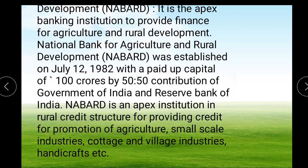NABARD functions as an Apex Institute and serves as a refinance institute for all kinds of production and investment credit to agriculture, small-scale industry, cottage and village industries, handicrafts, rural crafts, and allied economic activities, with the aim of promoting integrated rural development. It provides short-term, medium-term, and long-term credit to state cooperative banks and financial institutions approved by RBI. NABARD also gives long-term loans of up to 20 years, enabling state governments to subscribe to share capital of cooperative credit societies, and coordinates the activities of central and state governments and the Planning Commission.